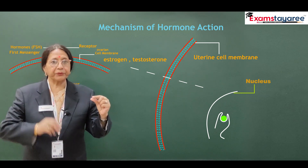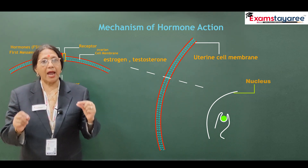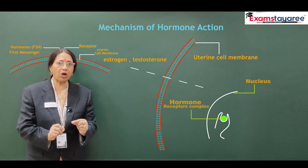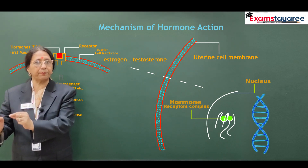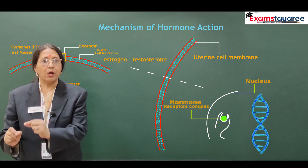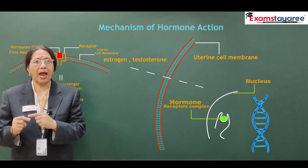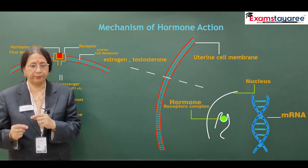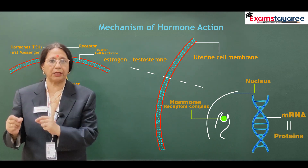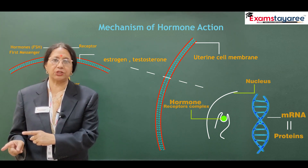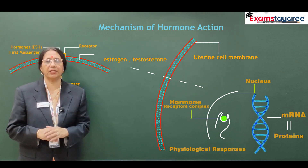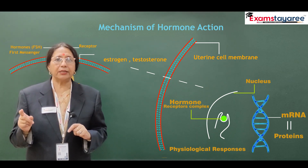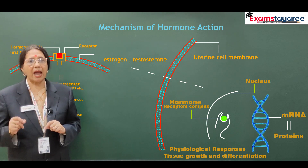This receptor will attach to the hormone and form a hormone-receptor complex. The hormone-receptor complex will join itself to specific places on the DNA, which will bring about changes and produce messenger RNA. Messenger RNA will produce a specific protein important for that specific reaction, and the physiological changes can be seen. For example, if this hormone is estrogen, it will bring about tissue differentiation and growth.